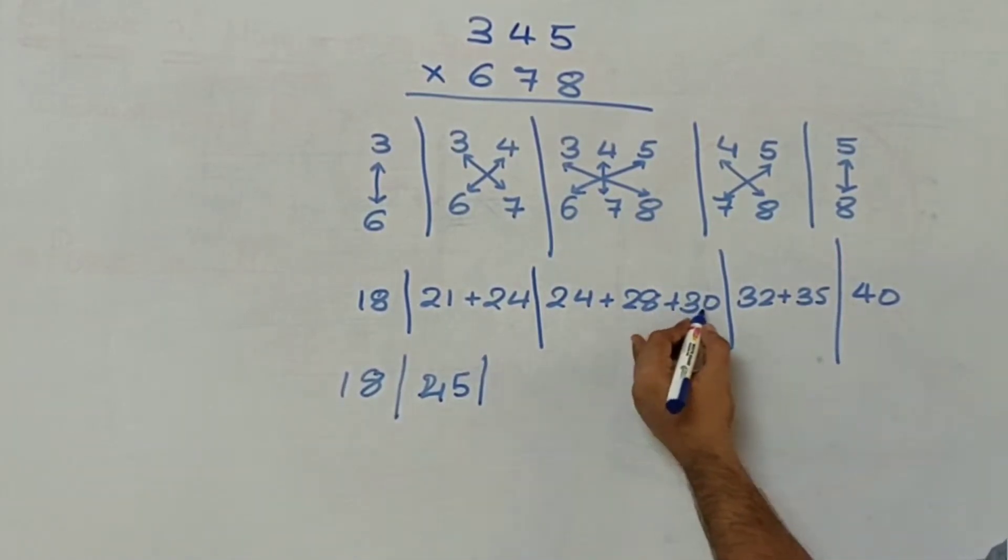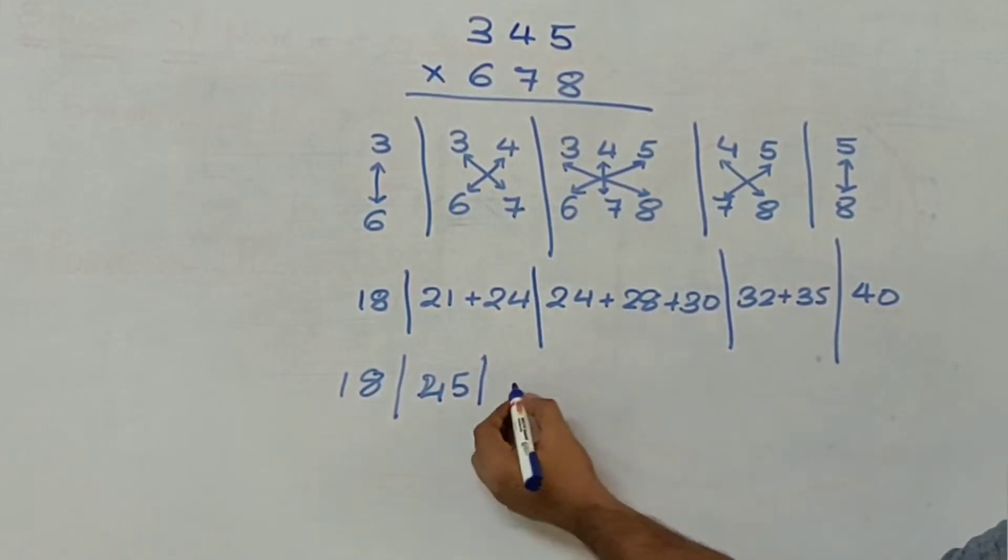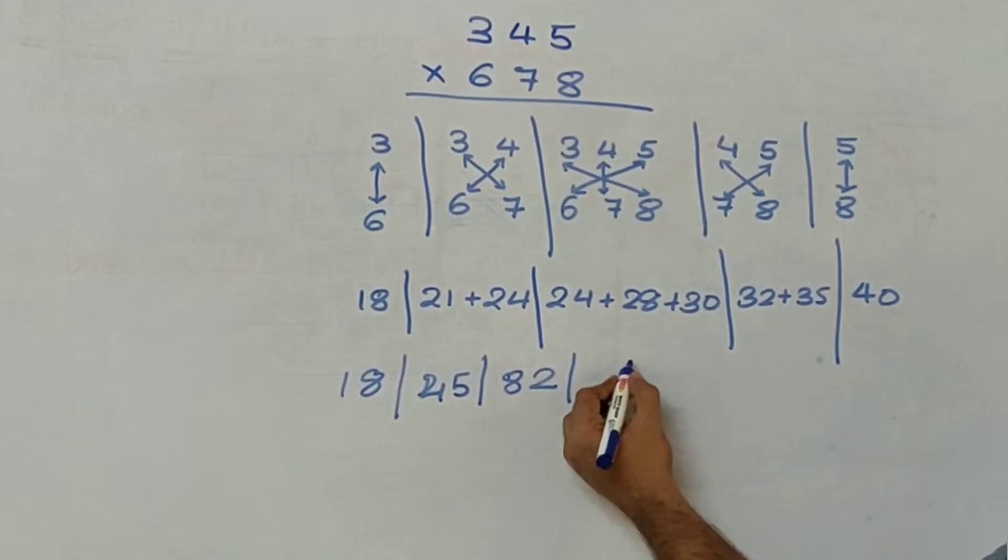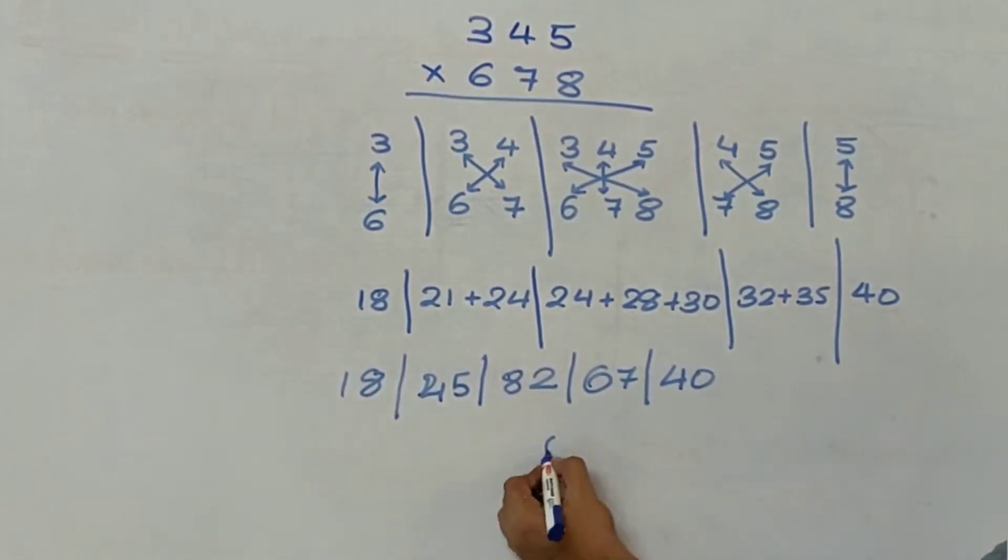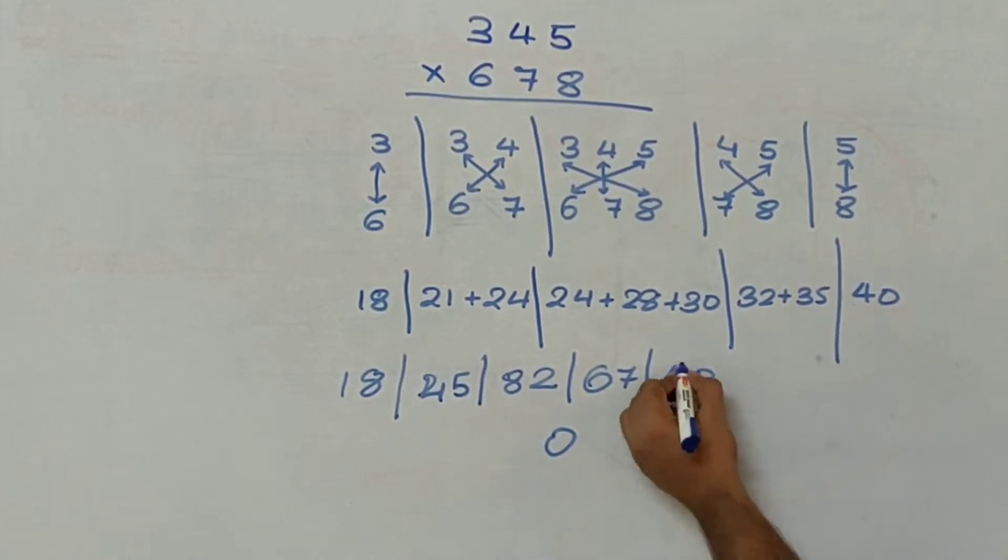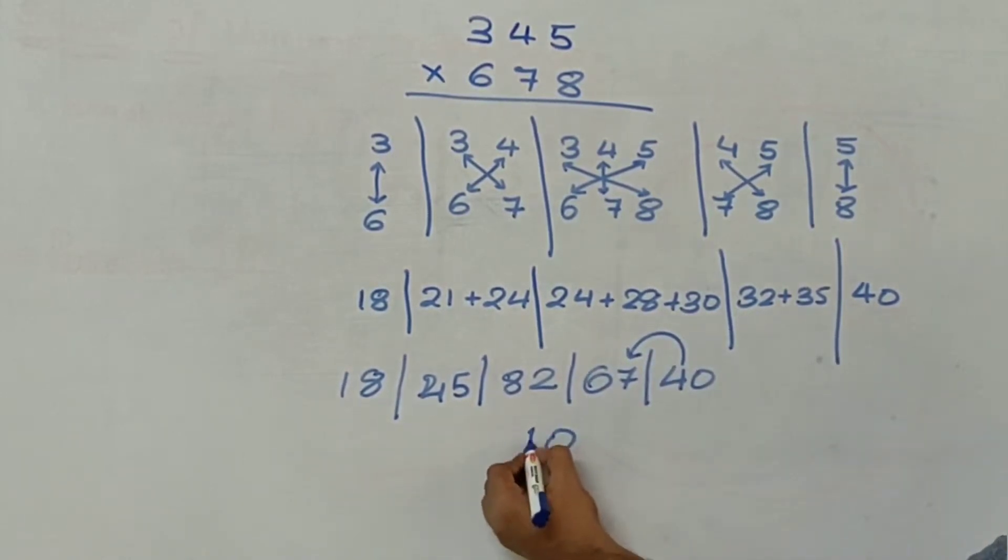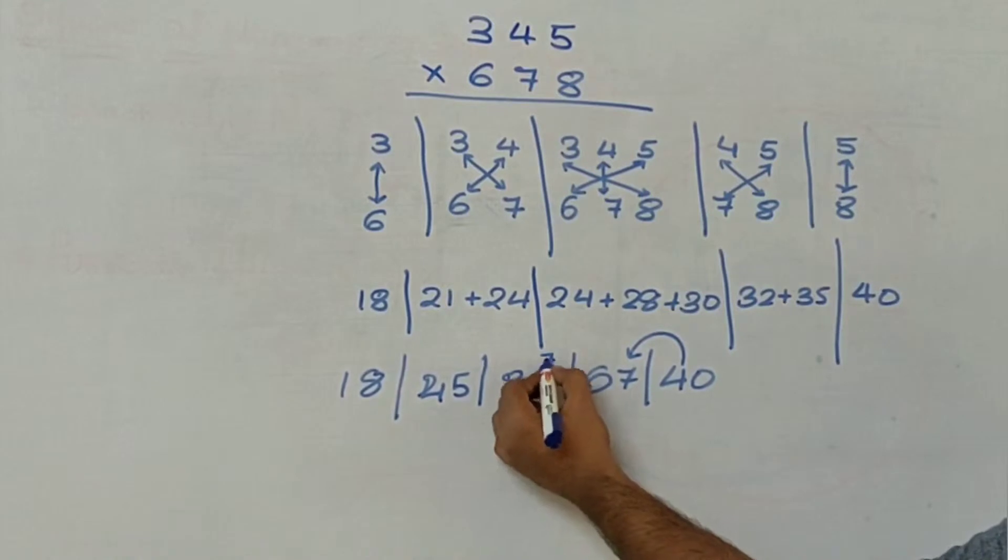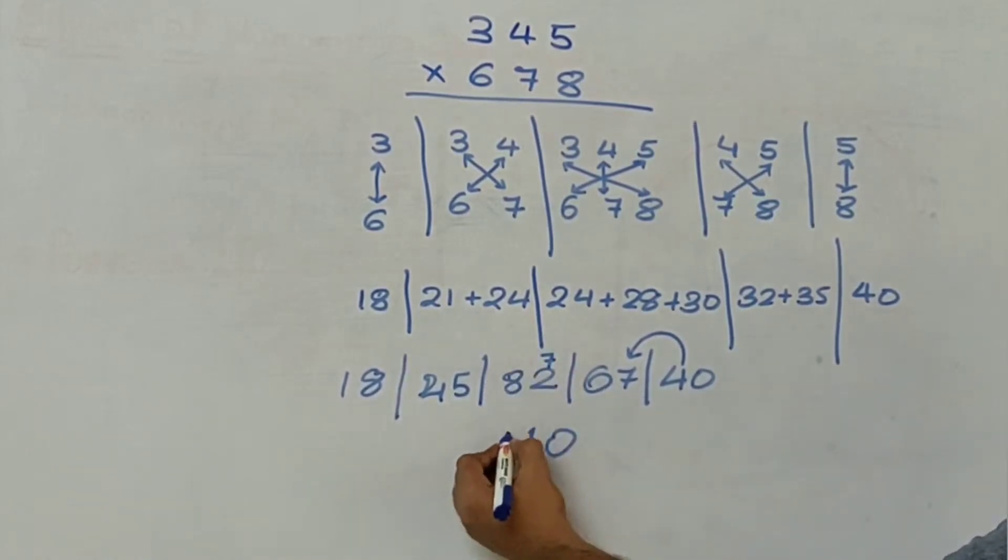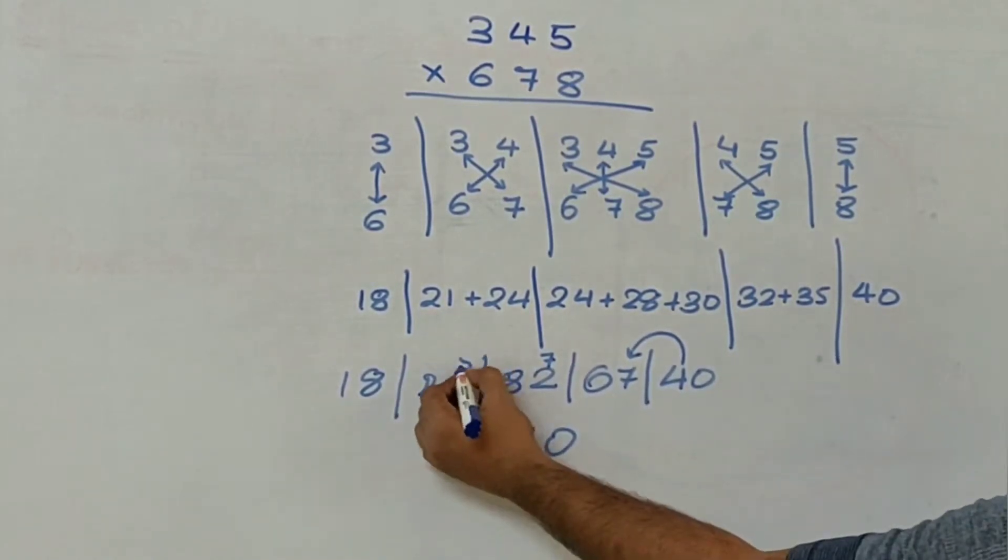This gives me 24 plus 30 is 54, 74, 82. 32 plus 35 gives me 67, and the last plus 40. So the next place is 0. 4 added up here. 67 plus 4 is 71. 1 here, 7 here. 82 plus 7 is 89. So 9 here, 8 here.